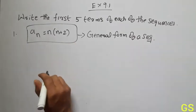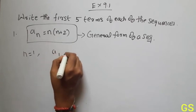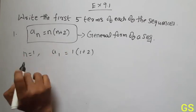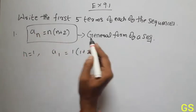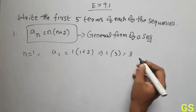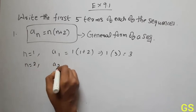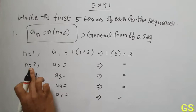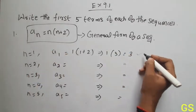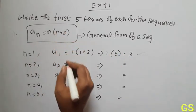Okay, so the first five terms: apply n is equal to 1. First, to obtain the first term, apply n=1. a_1 is equal to 1 into 1 plus 2. So 1 into 3 is 3. That's the first term. Next, second term: n is equal to 2. a_2 is equal to 2 into 2 plus 2.